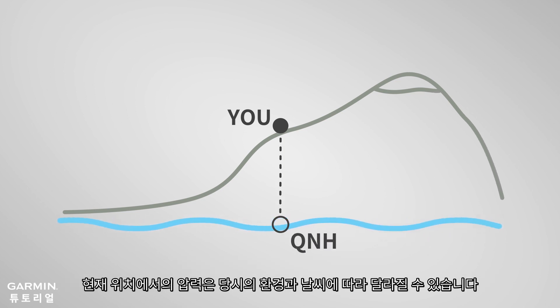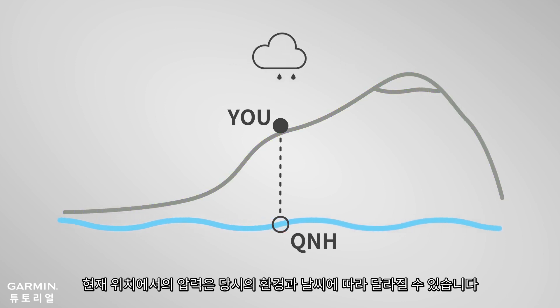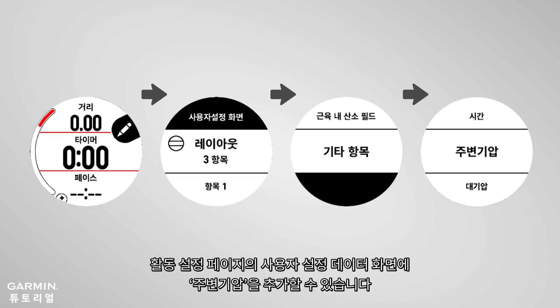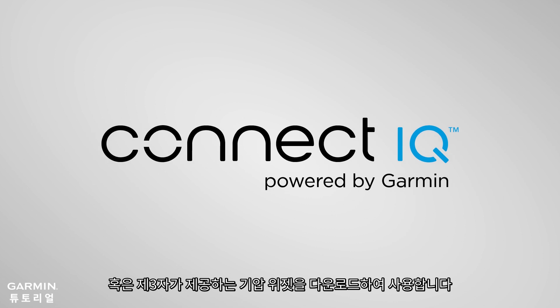The pressure at your current location will vary depending on the environment and weather at the time. If you need to know the current pressure at your location, you can add ambient pressure in the customizing data screen from your activity setting page, or download a third-party barometric pressure widget.